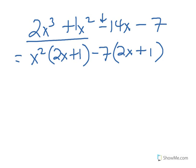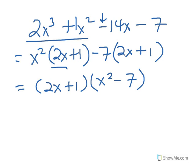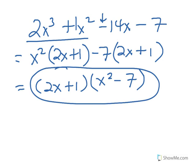Negative 14x divided by negative 7 is positive 2x, and negative 7 divided by negative 7 is positive 1. Those two terms have 2x plus 1 in common. What's left? x squared minus 7. That's the factorization for our original polynomial.